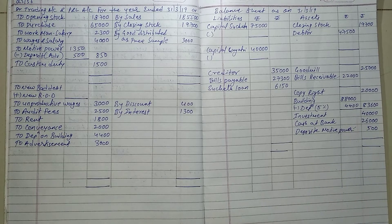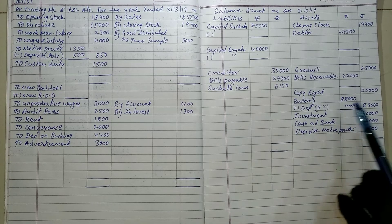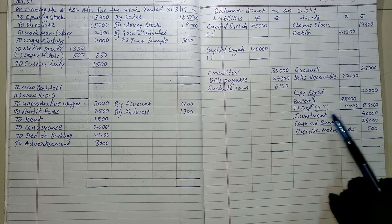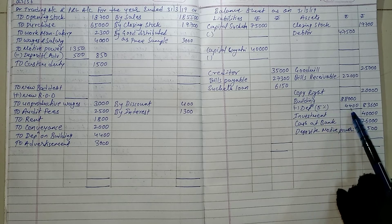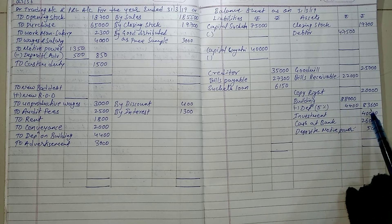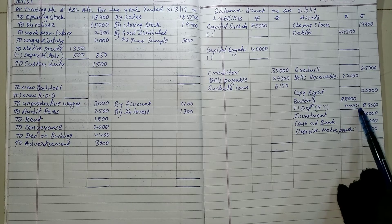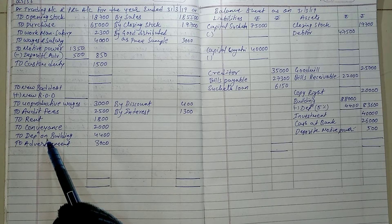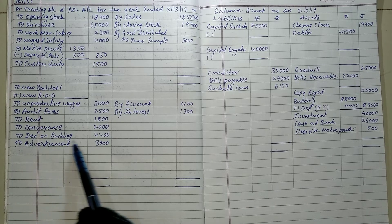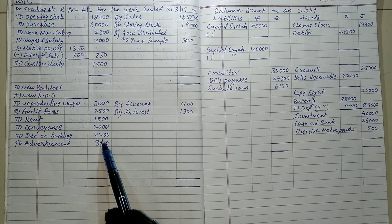Next adjustment: depreciation. Depreciation is 5% on 88,000, which equals 4,400. So 88,000 minus 4,400 gives the net figure. This depreciation of 4,400 is entered on the profit and loss account debit side.